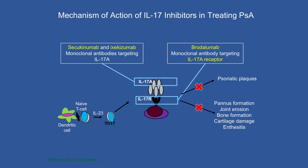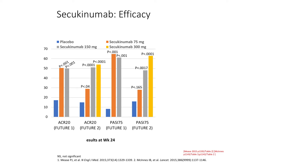We have several IL-17 inhibitors on the market. Secukinumab is the first, approved for all three — psoriasis, psoriatic arthritis, and ankylosing spondylitis. Ixekizumab is newer, approved for psoriasis and psoriatic arthritis. Then there's brodalumab, which is also an IL-17 agent; however, it is a receptor antagonist, as opposed to the other two which are monoclonal antibodies.